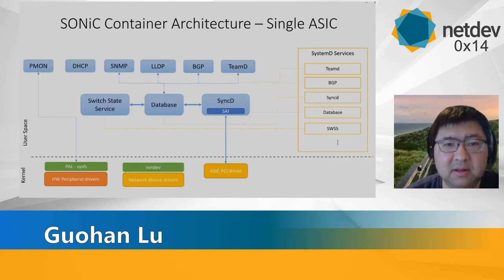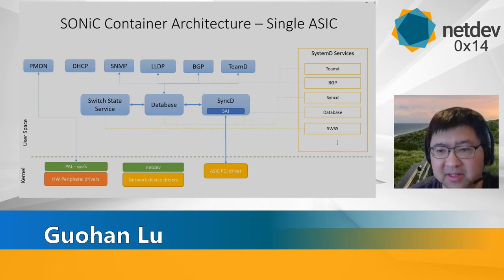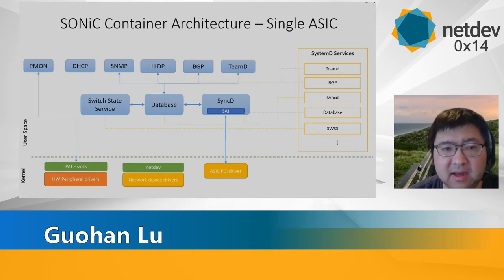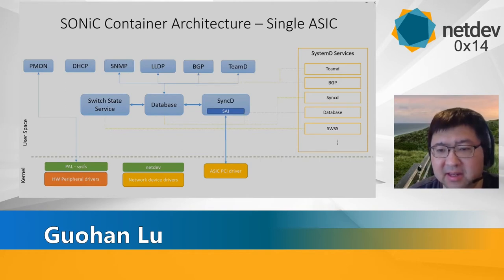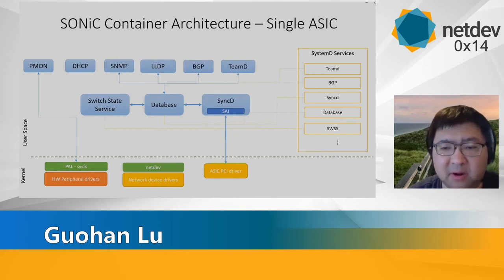The main SONiC architecture is a container-based architecture. This graph shows how the components work on top of Linux on a single ASIC. SONiC is primarily dependent on the Platform API, the SAI API, and Linux NetDev. Other components are swappable and can be changed by the supplier over time.